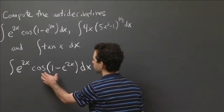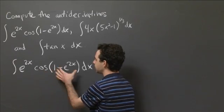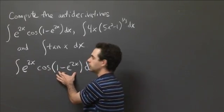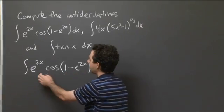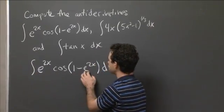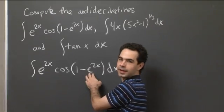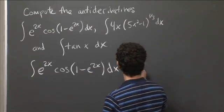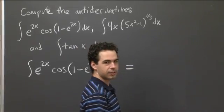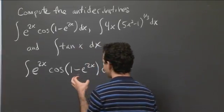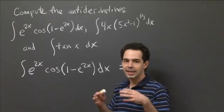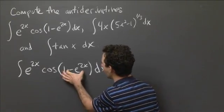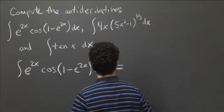So we have this clear sort of nested function thing going on. We have cosine of 1 minus e to the 2x. And then out front, we have something that looks a lot like the derivative of this 1 minus e to the 2x. So I'm going to try this with substitution then. And I think there are a few choices of substitution. But a natural one is to sort of find the most complicated inside piece. So in this case, that's this whole thing 1 minus e to the 2x.